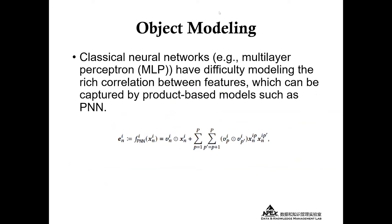The first part is object modeling. This module constructs an embedding vector for each user and item. However, classical neural networks, for example multi-layer perception and RNNs, have difficulty modeling the rich correlation between features, which can be captured by product-based modules such as PNN, which is used in our model. The formulation is as follows.